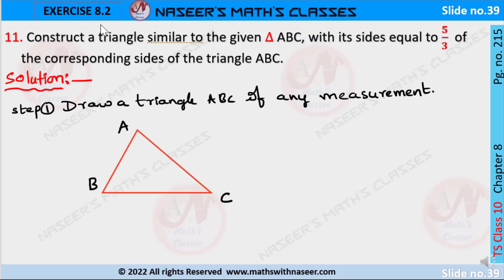Chapter 8 Similar Triangles, Exercise 8.2, Problem 11. Construct a triangle similar to the given triangle ABC with its sides equal to 5/3 times of corresponding sides of the triangle ABC.